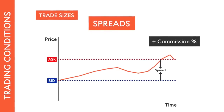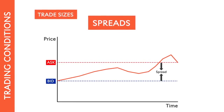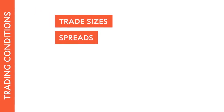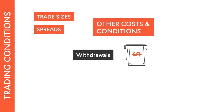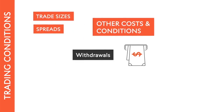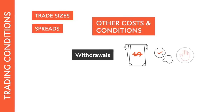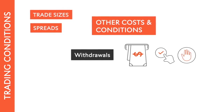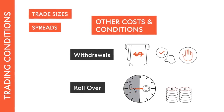Some brokers offer tighter spreads but apply a commission on every trade, while others add markups to spreads. A combination of both is also possible. It is important to pay attention to these different models when comparing spreads between brokers. You might even find other hidden costs, such as withdrawal fees. While checking such stipulations, also ensure that the funding and withdrawal methods for your account are convenient and that there are no imposed limits that would hinder you. Traders who hold positions overnight should also check the rollover policy, as brokers apply different rates.